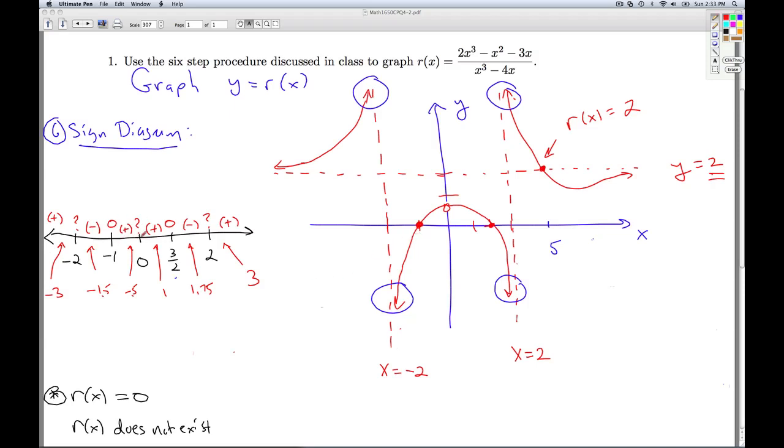From negative 1 to 0 and then 0 to 3 halves, the function is positive, that means it's above the x-axis. From 3 halves to 2, it's below the x-axis. And from 2 to infinity, it's above the x-axis.